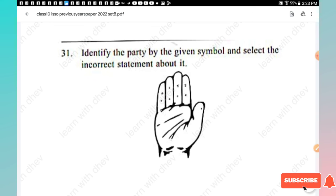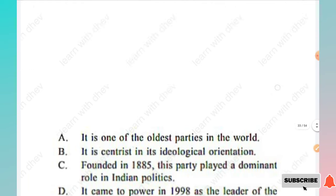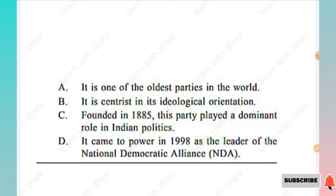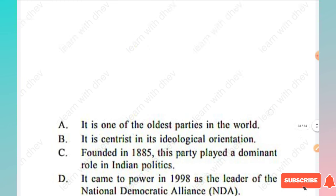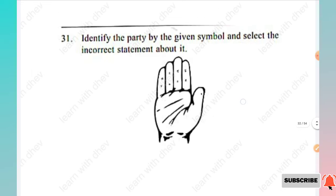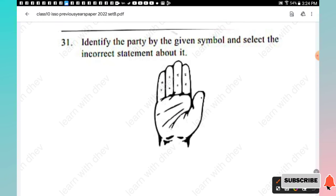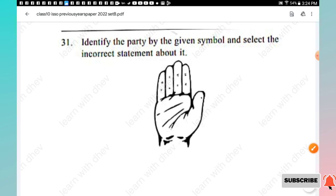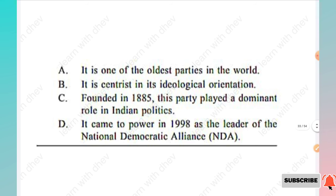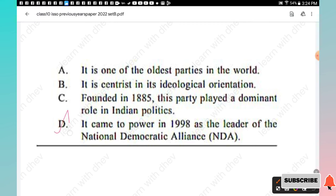Question 31: Identify the party by the given symbol and select the incorrect statement about it. The hand symbol represents the Indian National Congress party. Options: it is one of the oldest parties in the world, centrist in ideological orientation, founded in 1885 and played a dominant role in Indian politics, it came to power in 1998 as leader of the National Democratic Alliance. The incorrect statement is Option D.